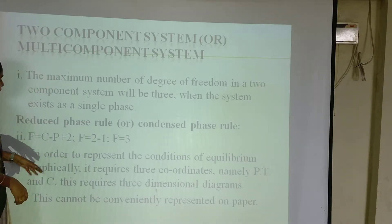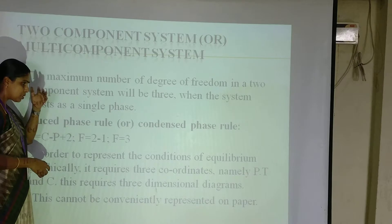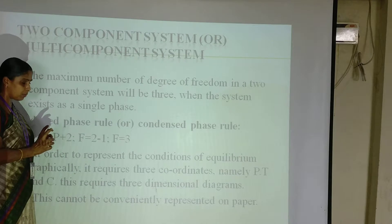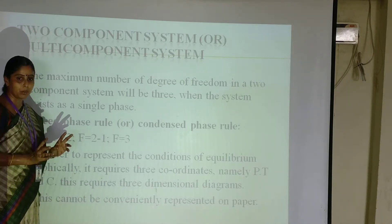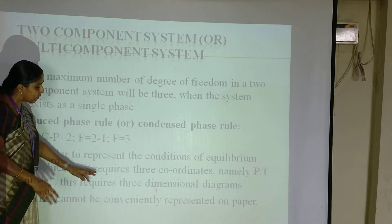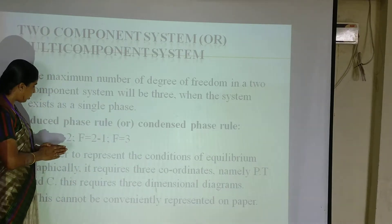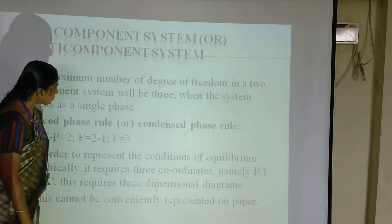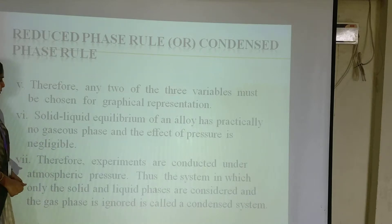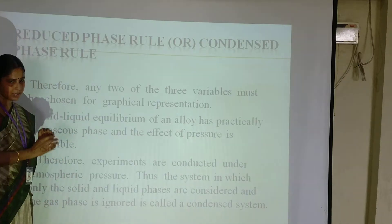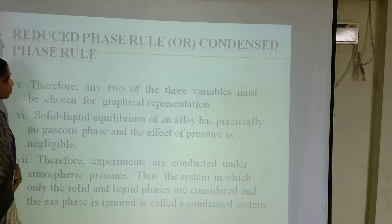This reduced phase rule is also called the condensed phase rule. In the condensed phase rule, we are only considering temperature and concentration of the particular system. Another reason we use the reduced phase rule is that a phase diagram is a graphical representation — we can only draw on x-axis and y-axis, not in three dimensions. So we need this reduced phase rule. Gas phase is not considered, so the effect of pressure is neglected.